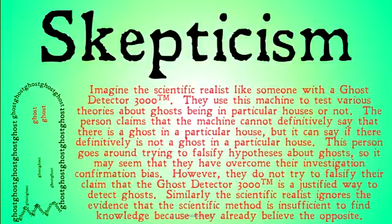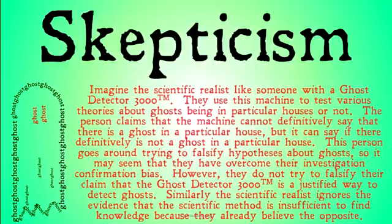Imagine the scientific realist is like someone with a Ghost Detector 3000. They use this machine to test various theories about ghosts being in particular houses. The person claims the machine cannot definitively say there is a ghost in a particular house, but it can say if there's definitely not a ghost — in the same way scientific theories can be falsified but never truly proven 100%. This person goes around trying to falsify hypotheses about ghosts, so it may seem they've overcome investigation confirmation bias. However, they do not try to falsify their claim that the Ghost Detector 3000 is a justified way to detect ghosts. Similarly, the scientific realist ignores evidence that the scientific method is insufficient to find knowledge, because they already believe the opposite.